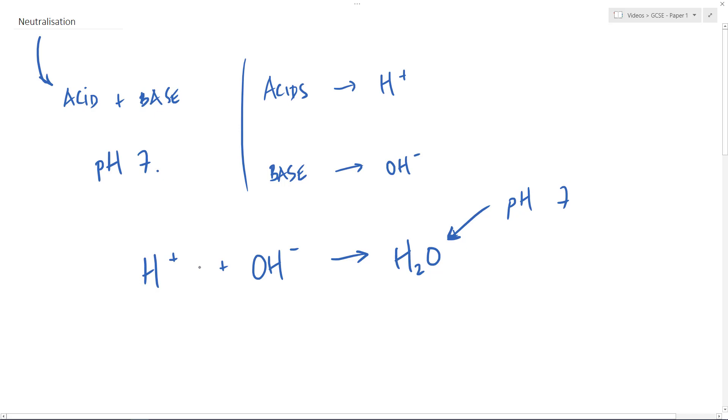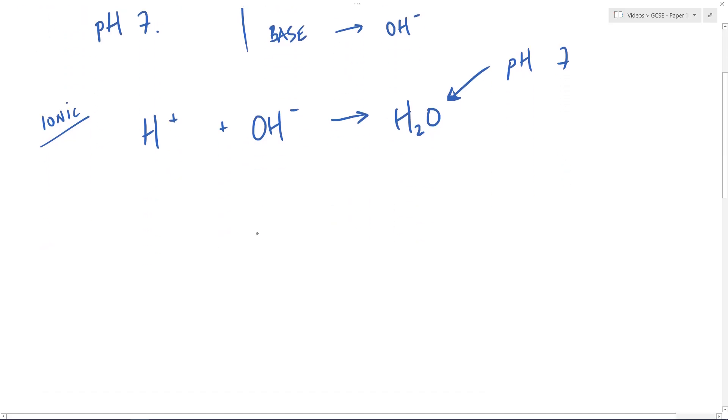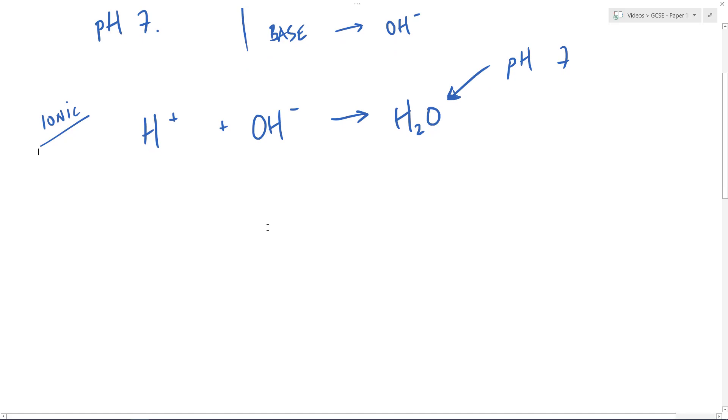However, there's a problem here. The H+ ions and OH- ions whilst they give us the ionic, and this is an ionic equation because it's ions reacting. Whilst this is the ionic neutralisation reaction, it doesn't really help us in the sense that we can't just add hydrogen ions. We can't just add hydroxide ions. What we have to actually add is acids, proper acids and bases. So what we find is that acid plus base, it does produce water but it also produces a metal salt.